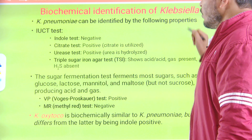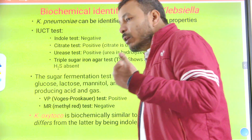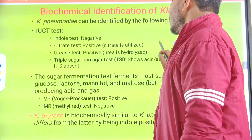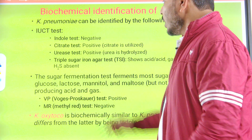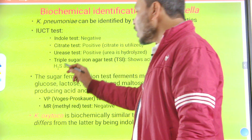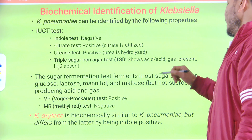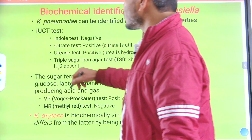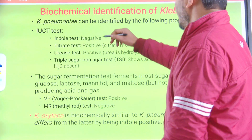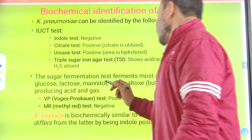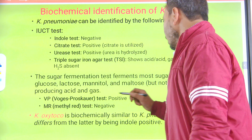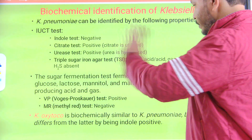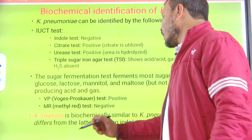Klebsiella pneumoniae can be identified by the ICUT biochemical tests: Indole test — negative; Citrate test — positive (citrate is utilized); Urease test — positive (urea is hydrolyzed); Triple Sugar Iron Agar (TSIA) — acid, acid, gas present, H2S absent. For sugar fermentation, Klebsiella pneumoniae ferments glucose, lactose, mannitol, and maltose but not sucrose.